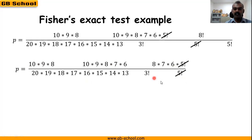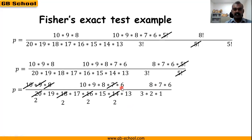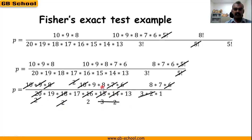Now we've reduced almost all the factorials, so we expand and cancel the remaining numbers one by one. Two 10s make 20, two 9s make 18, two 8s make 16, two 7s make 14 — all cancelled. Then 6 reduces with 2×3, two 5s make 10, three 5s make 15, 6 reduces with 2×3. Remaining 2s cancel with 4s and 8s.